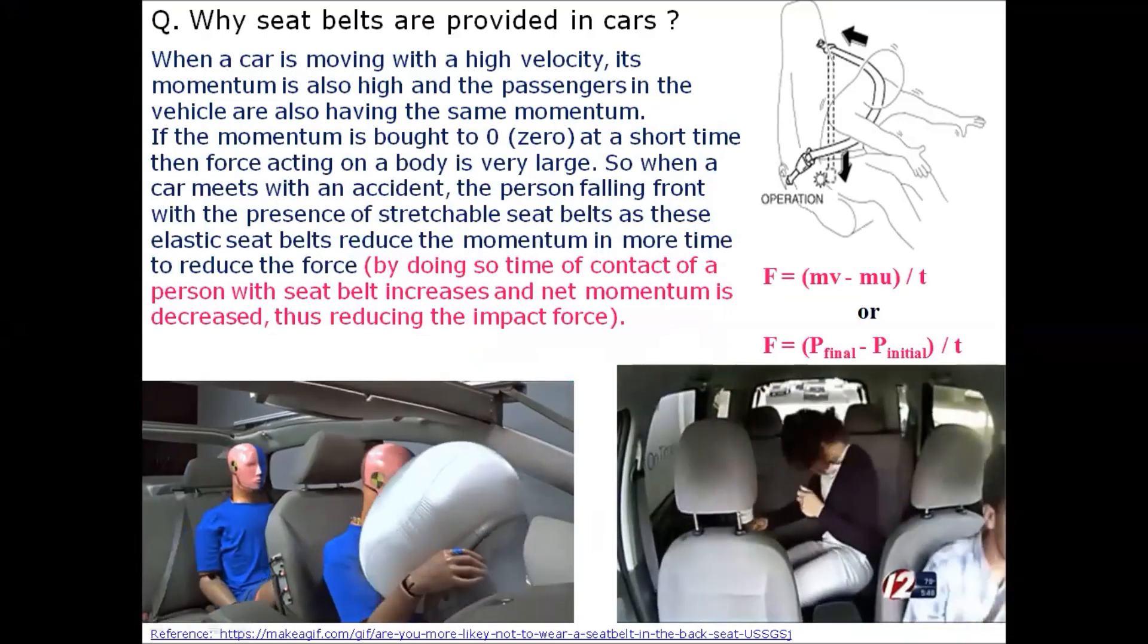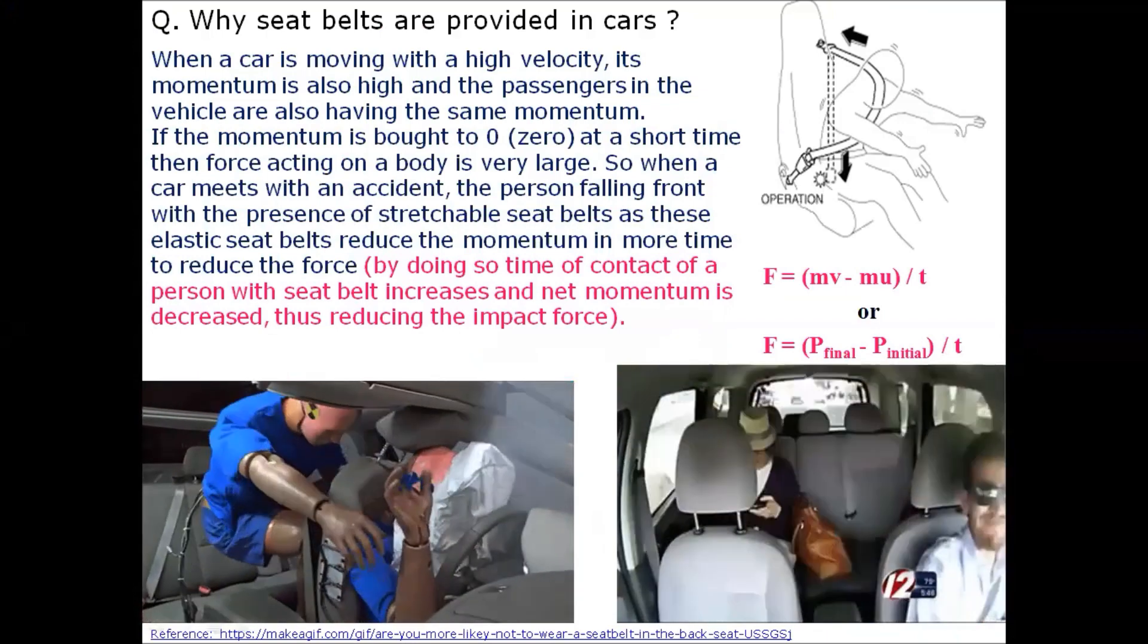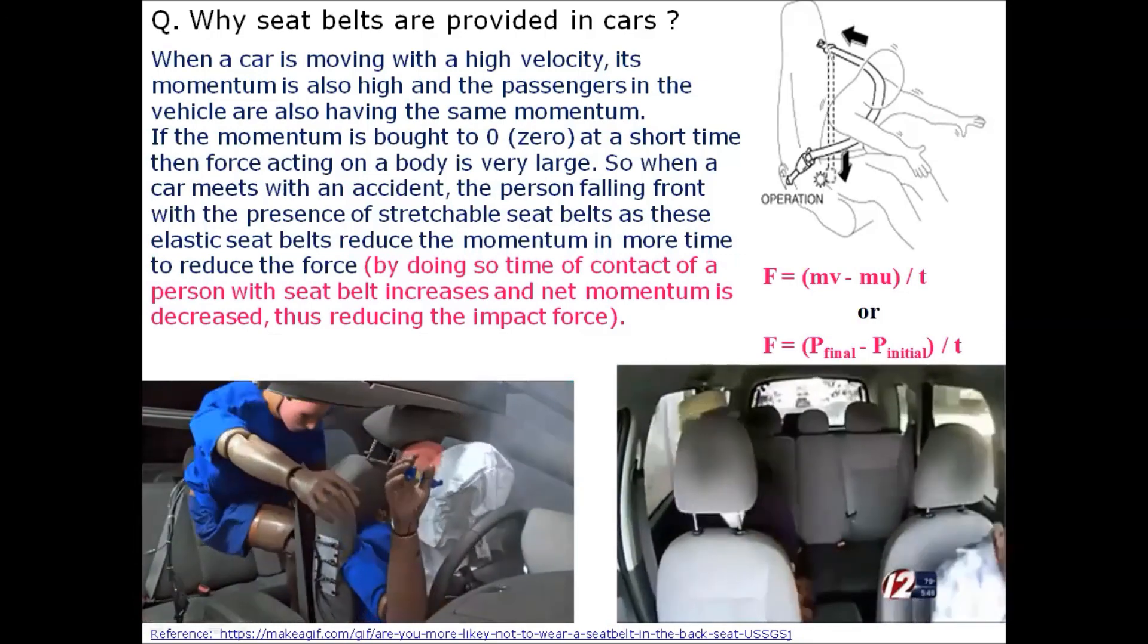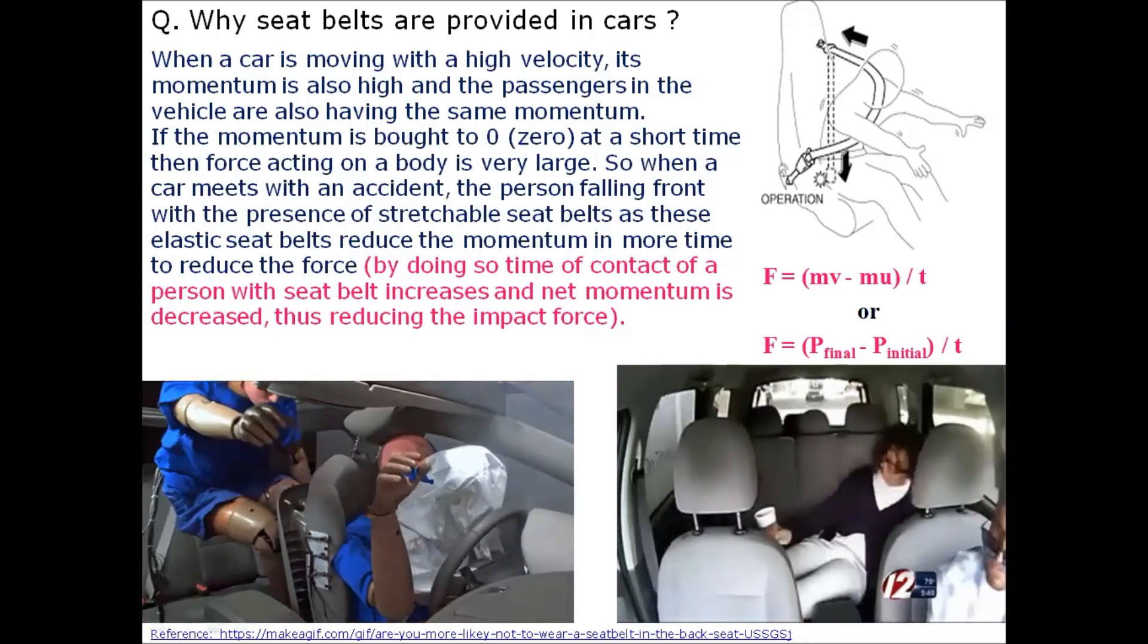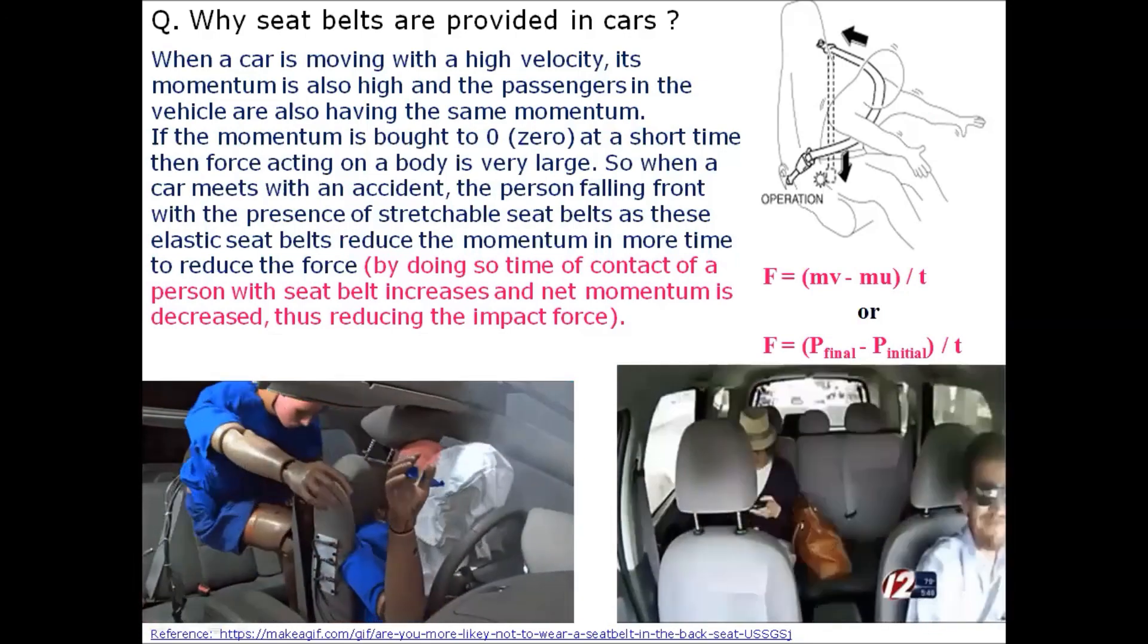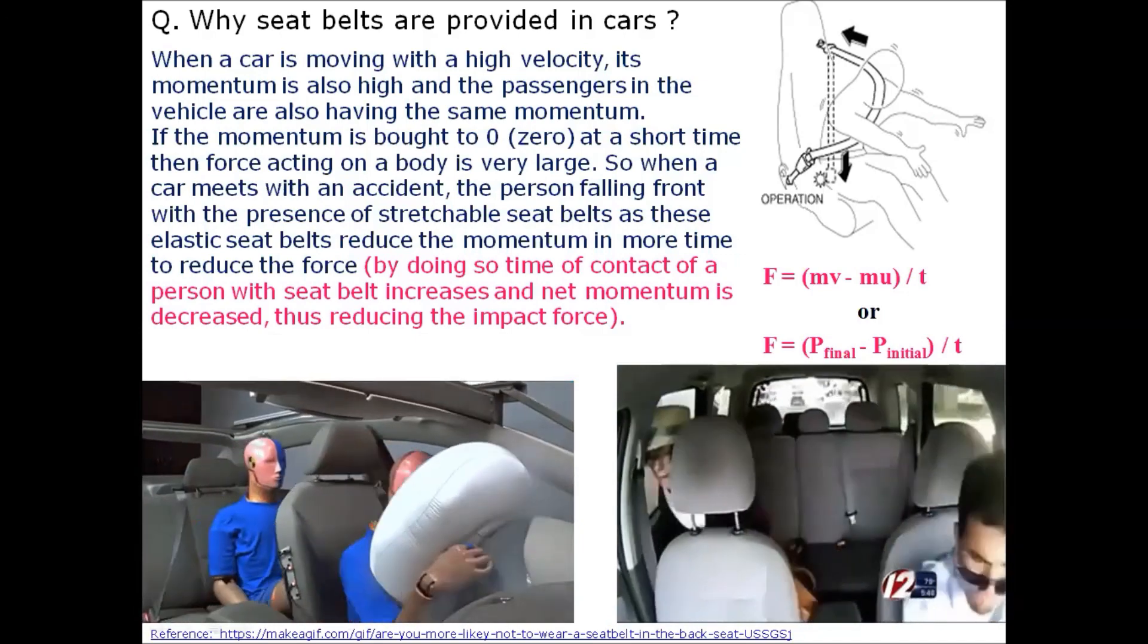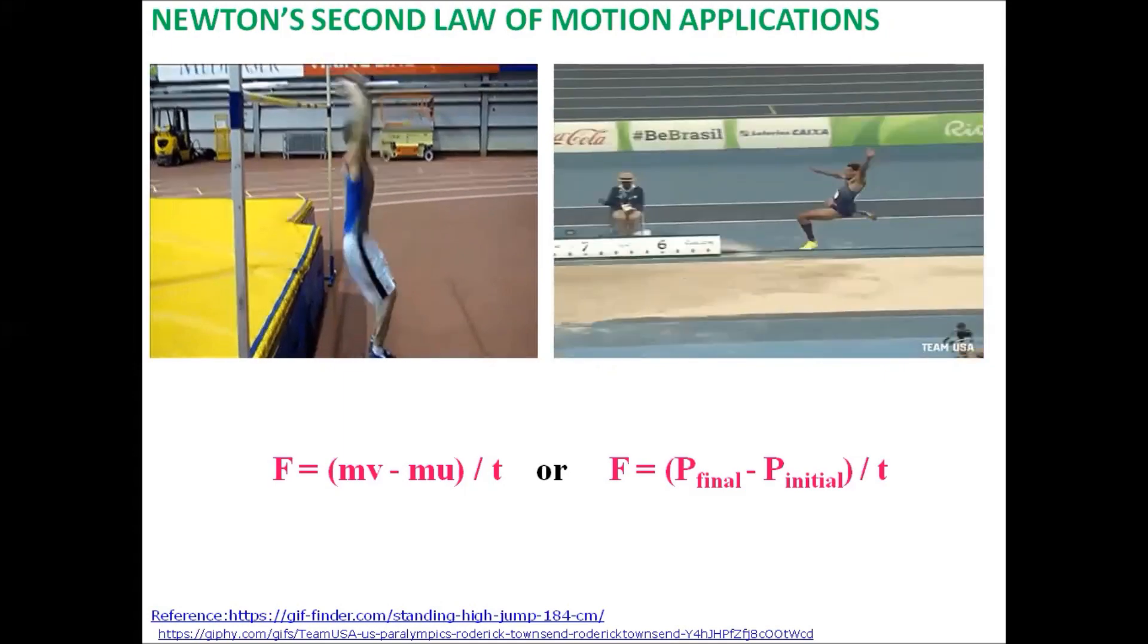Another application: Why seat belts are provided in cars? When a car is moving with a high velocity, its momentum is also high and the passengers in the vehicle are also having the same momentum. If the momentum is brought to zero at a very short time, then force acting on a body is very large and it causes a major injury. When a car meets with an accident, the person falling forward with the presence of stretchable seat belts—these elastic seat belts reduce the momentum in more time, thus reducing the force. By doing so, the time of contact of a person with seat belt increases and net momentum is decreased, thus reducing the impact force. The two given animations of high jump and long jump also illustrate Newton's second law of motion application.